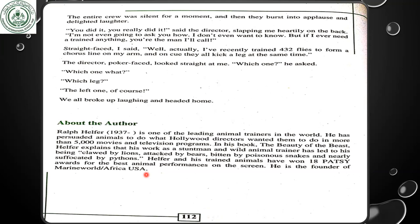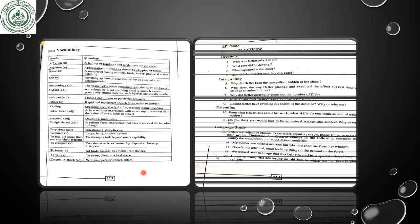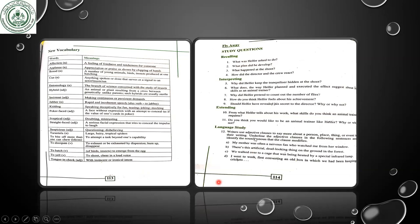So dear students, that was the story 'Fly Away.' He trained flies and visited his friend Professor Jonathan who helped him a lot. Hope you understood. Now for question and answer — on page numbers 113 and 114, we have a few vocabulary words and study questions. It's quite easy to answer these questions after reading the story. For example: what was Halfer asked to do? Mr. Halfer was asked to provide 5,000 flies to be used on an artificial dead-looking thing. The flies were to crawl on it and fly away only when told to do so.